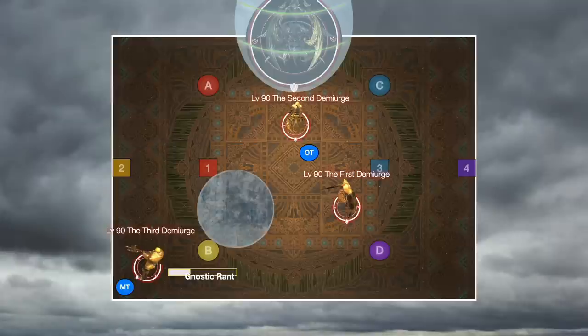Finally, we tend to have the third Demiurge after this pulled to the corner because at 60% health, it's going to cast Gnostic Rant. This is a 270-degree cleave. If you have it both pulled to the corner and facing the corner, everyone else in the party will naturally dodge this. The only person who has to work out is the tank who's taking it so that they can move through the boss before the end of the cast.